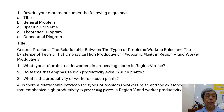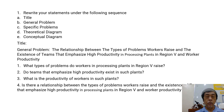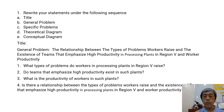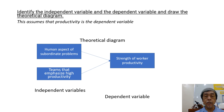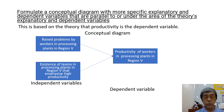The specific problems will simply be the independent and dependent variables identified in our conceptual framework. Number one: what types of problems do workers in processing plants in Region 5 raise? Number two: do teams that emphasize high productivity exist in such plants? Number three: what is the productivity of workers in such plants? Number four: is there a relationship between the types of problems workers raise and the existence of teams that emphasize high productivity in processing plants in Region 5 and work productivity?